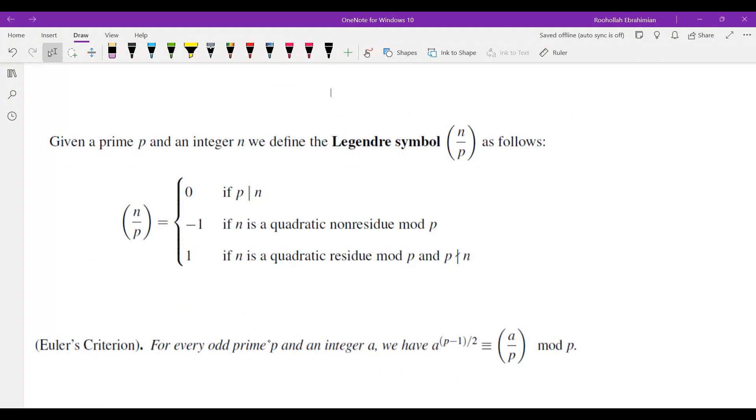And that's called the Legendre symbol. If P is a prime and N is an integer, N over P is 0 if P divides N. It is negative 1 if N is a quadratic non-residue mod P. And it is 1 if N is a quadratic residue mod P and P does not divide N.